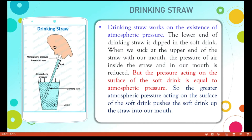A drinking straw works on the existence of atmospheric pressure. The lower end of the drinking straw is dipped into the soft drink. When we suck at the upper end with our mouth, the pressure of the air inside the straw and in our mouth is reduced. But the pressure acting on the surface of the soft drink equals atmospheric pressure. So the greater atmospheric pressure acting on the surface of the soft drink pushes the soft drink up the straw into our mouth.